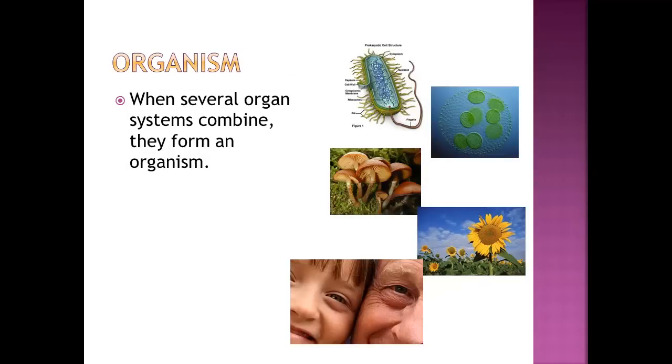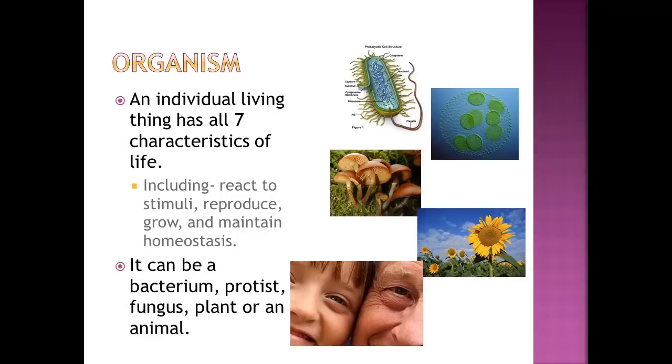The last level of organization that we're going to talk about today is an organism. When several organ systems combine together, they form an organism. And an organism is an individual living thing that has all seven characteristics of life. So, for example, all of these things here, from bacterium, to produce, to fungi, to plants, to animals,